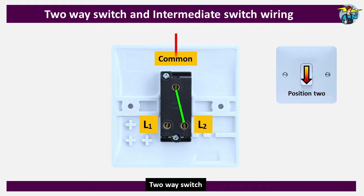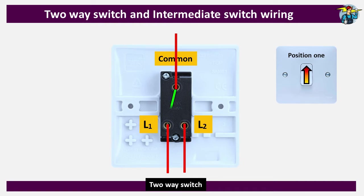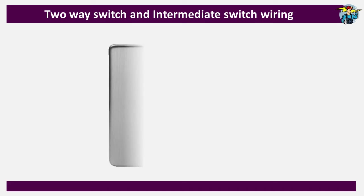If you connect a power supply to the Common terminal, the downward position of the switch will make current flow through the Common port to L2. Likewise, if you change the switch to upward position, current will flow through the Common port to L1. These switches can also be called SPDT, or Single Pole Double Throw switches, since the single pole Common port is throwing power to two ports — namely L1 and L2.